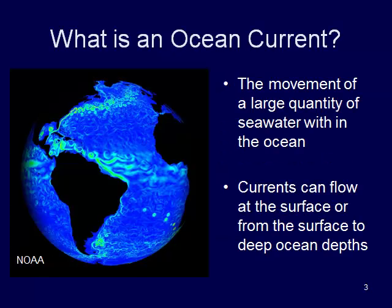What is an ocean current? It's the movement of a large quantity of seawater within the ocean. This picture here is from the NOAA website — it's actually a video loop. We're going to watch a similar one in the next video. It shows the movement of the water at the surface of the ocean.